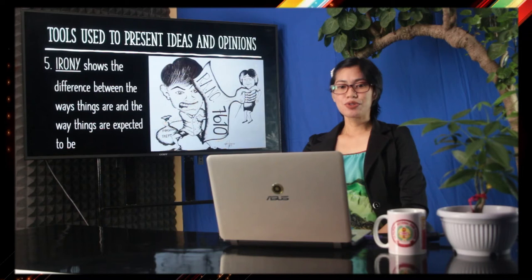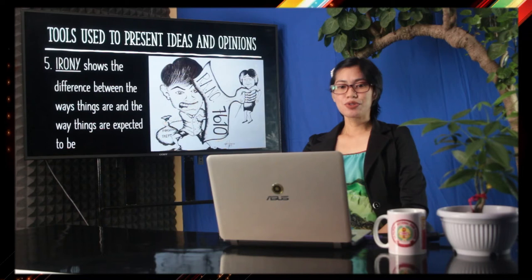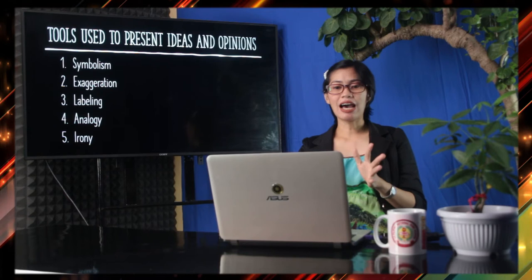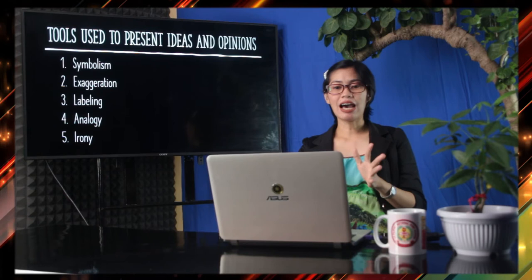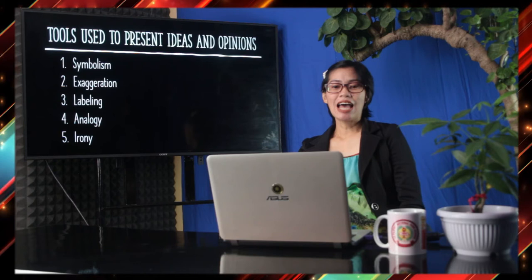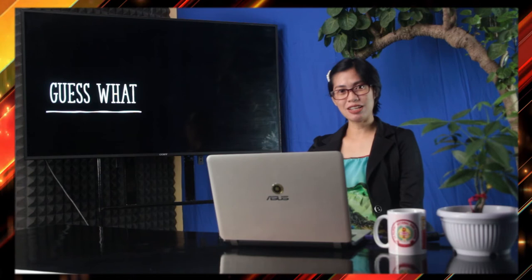So that's how irony works — the opposite of what you are expecting is happening. Again, we have five tools used to present ideas and opinions: symbolism, exaggeration, labeling, analogy, and irony. Don't forget those five. It's not necessary that every tool appears in one editorial cartoon — you may use any of them. Now let's go back to the guess-what activity we had earlier.